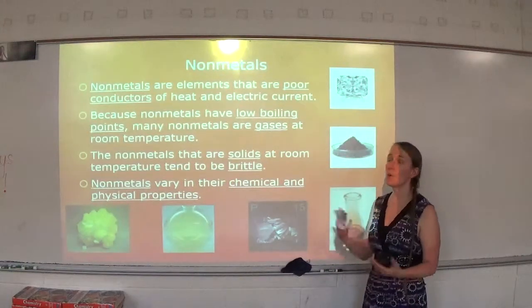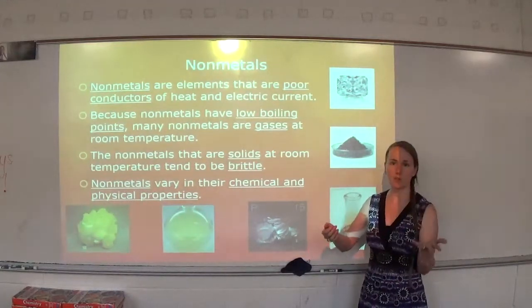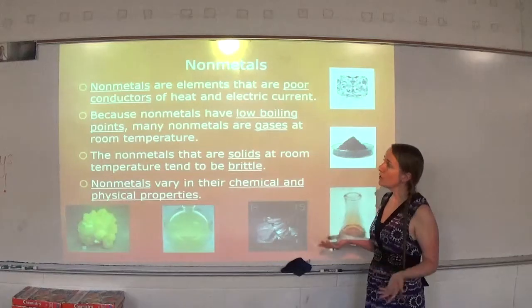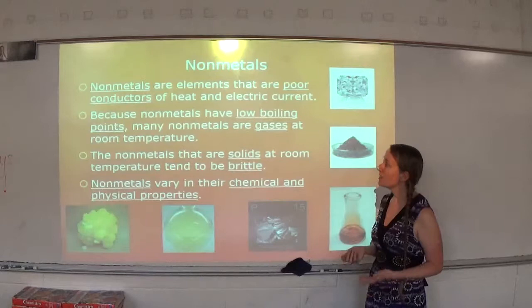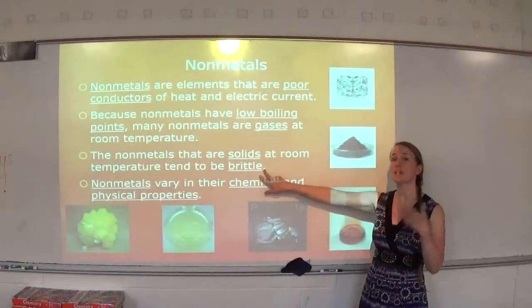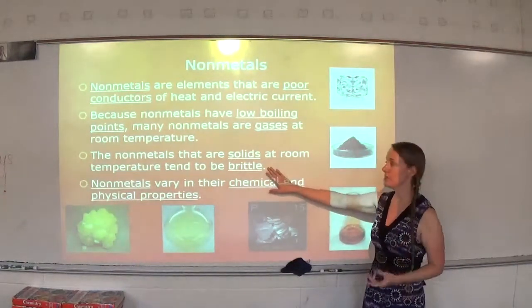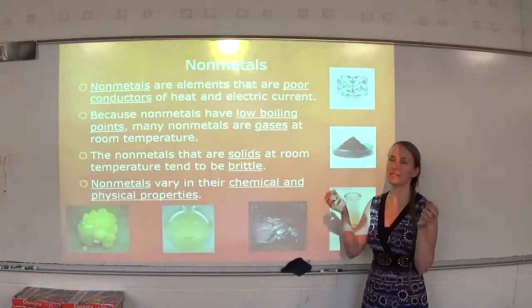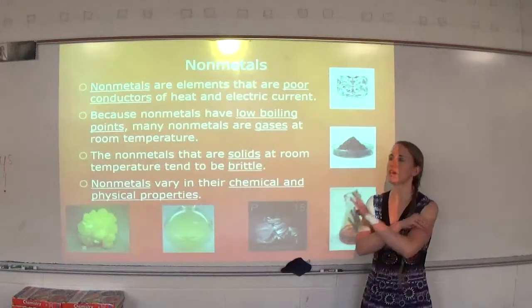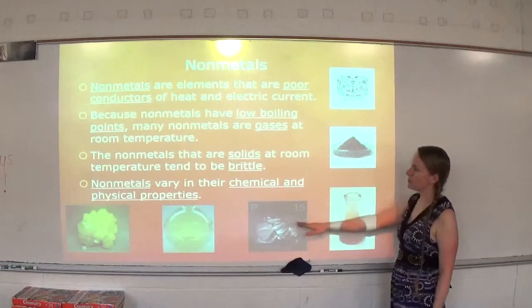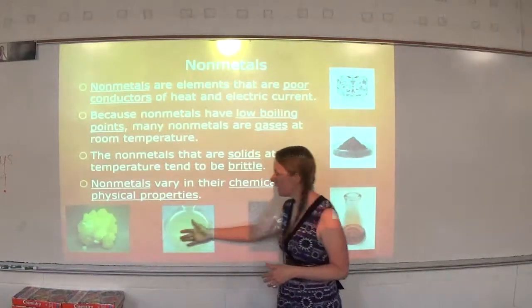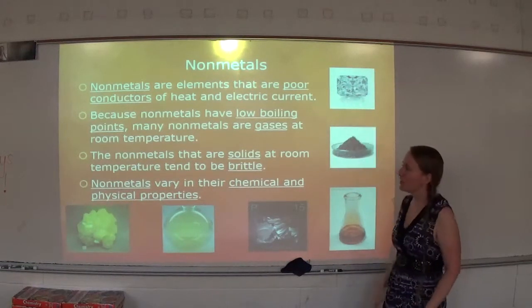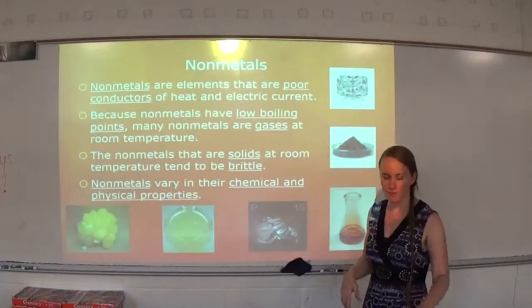Nonmetals are elements that are poorer conductors of heat and electric current. Whatever properties metals have, nonmetals probably don't. Because nonmetals have low boiling points, many nonmetals are gases at room temperature. The nonmetals that are solids at room temperature tend to be brittle — instead of being malleable and ductile like metals, nonmetals shatter when you hit them with a hammer. Nonmetals vary in their chemical and physical properties. Most metals are a silvery solid, but nonmetals have a variety: a yellow solid, a greenish gas, a purplish black solid, a reddish brown liquid, a black solid, and diamond. Nonmetals have a lot more variation in their properties.